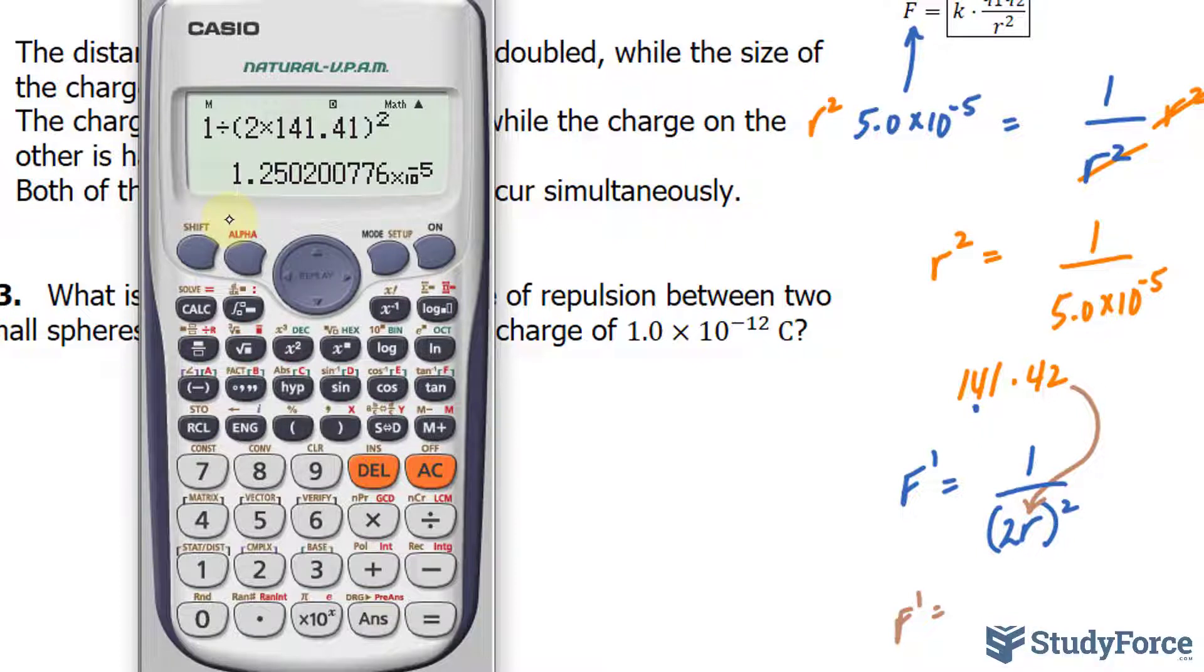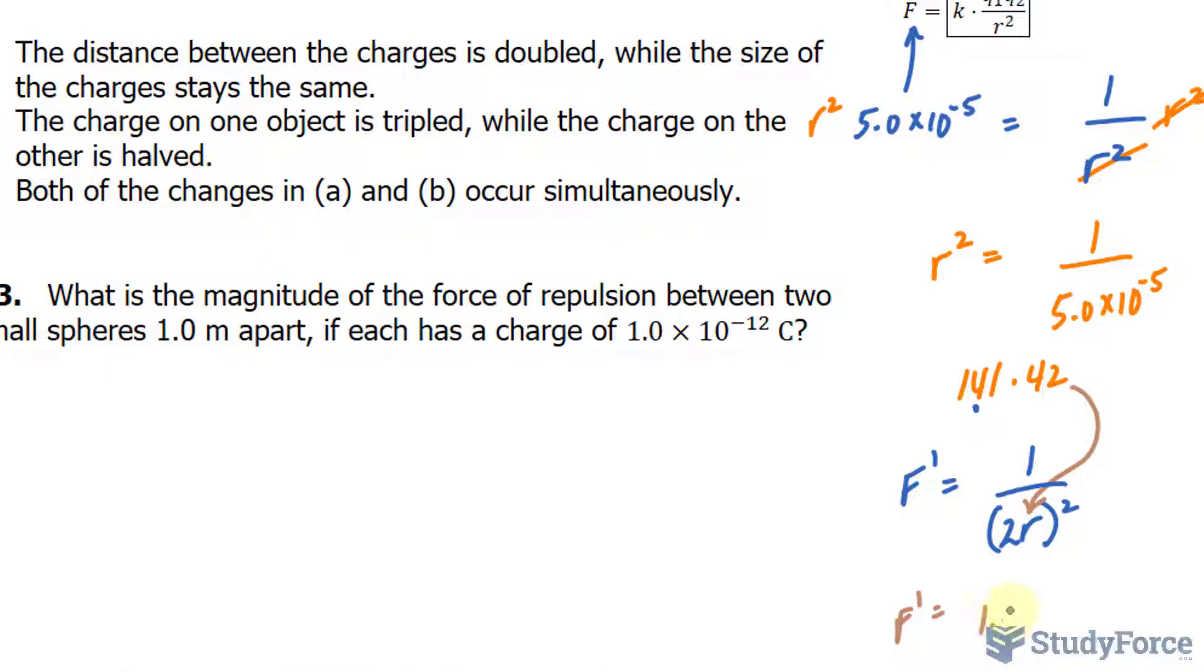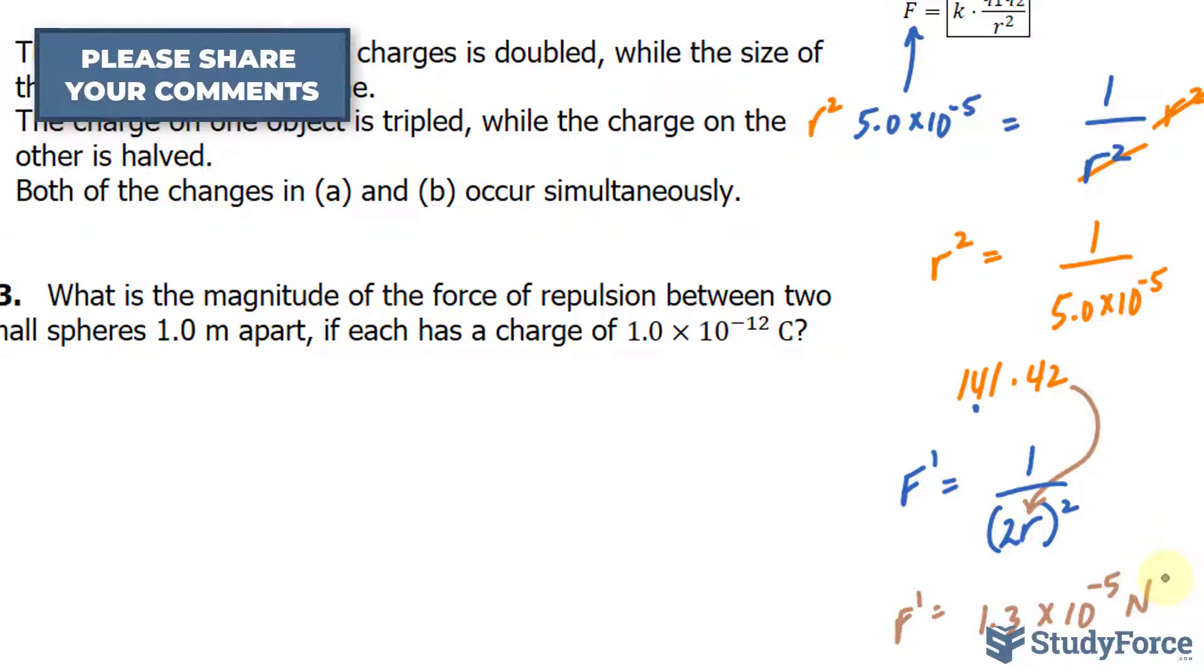Which gives us a new force that is, we need that to two significant figures, so 1.3 times 10 to the power of negative 5 newtons. And if your teacher doesn't care about significant figures, you can simply round to 1.2 times 10 to the power of negative 5.